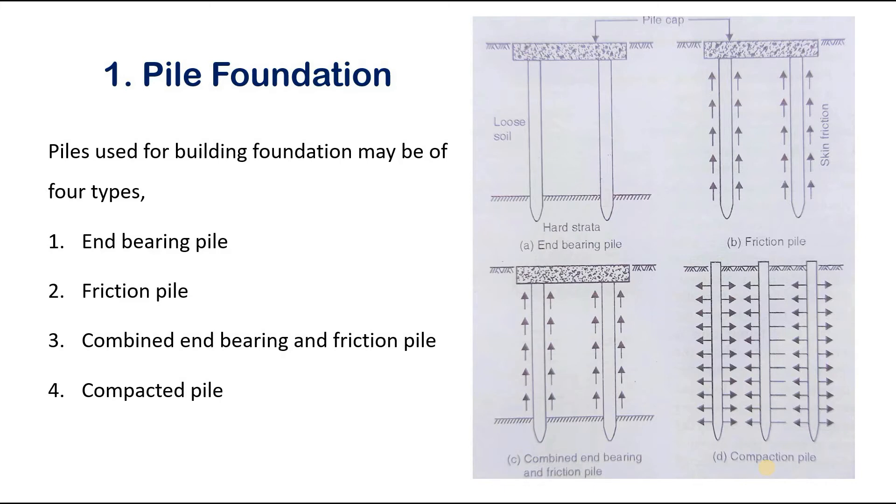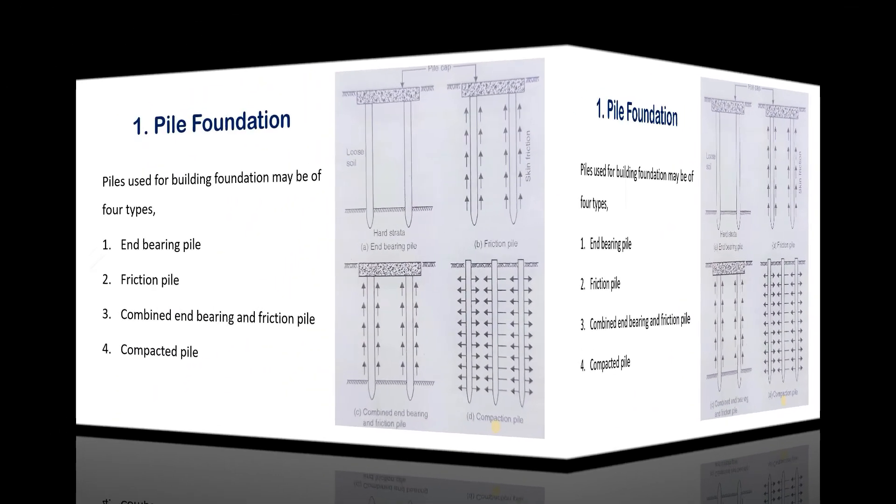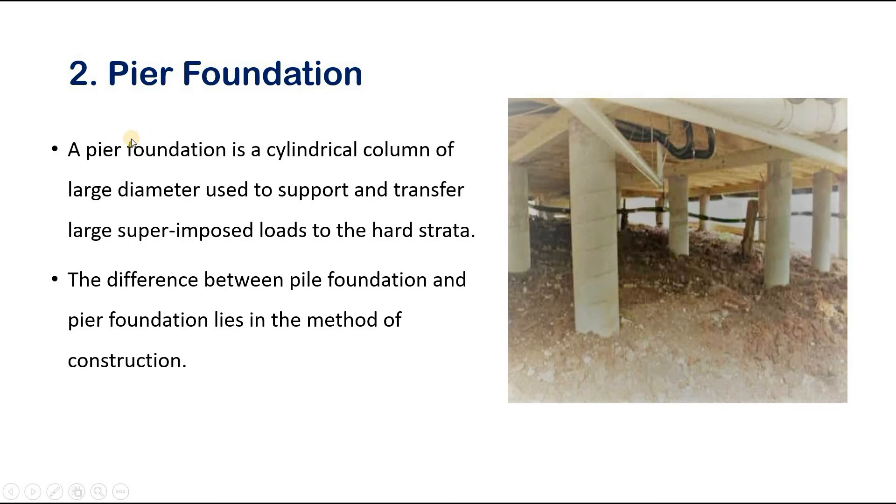Next type of deep foundation is pier foundation. It is also called as drilled caisson foundation. A pier foundation is a cylindrical column of larger diameter which is used to support and transfer loads from superstructure to the hard strata. The main difference between the pile foundation and pier foundation lies in the method of construction.